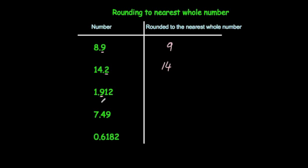For 1.912, the tenths digit is 9, so we round up — the next whole number would be 2. For 7.49, the tenths digit is 4, so we round down to 7. And finally, 0.6182 — the tenths digit is 6, so we round up, and the next whole number would be 1. So that's how you round numbers to the nearest whole number.